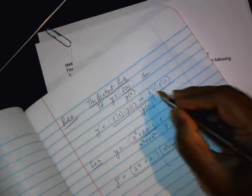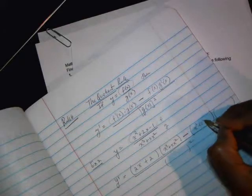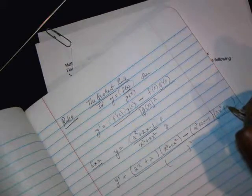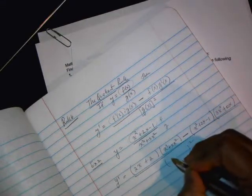Minus, keep the top, x squared, plus 2x minus 1, times g prime, derivative of 3x squared plus 10x, all over bottom squared.